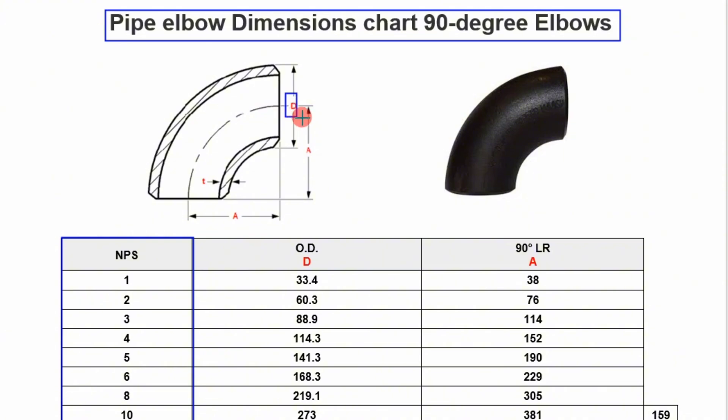The outside diameters OD of elbows are shown in the second column. The radius or center to end dimension of the 90 degree long radius elbows are shown in the third column. But many times custom elbow angles are required at site which should be cut from standard 90 degree elbows.